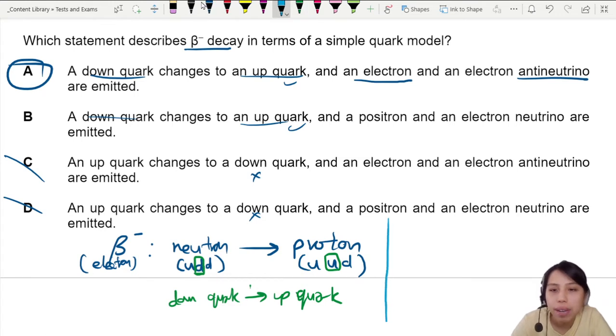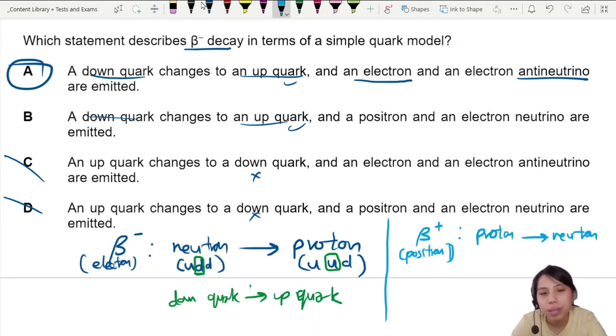Side note, if you have beta plus, this particle is called a positron. It's like the antimatter of the electron. What happens in beta plus decay when a nucleus undergoes it, it's now opposite. A proton becomes a neutron.